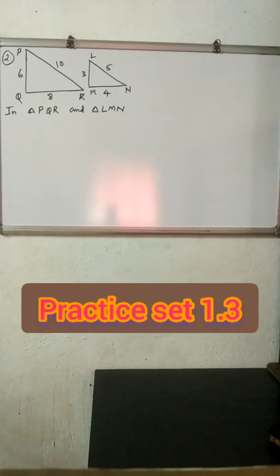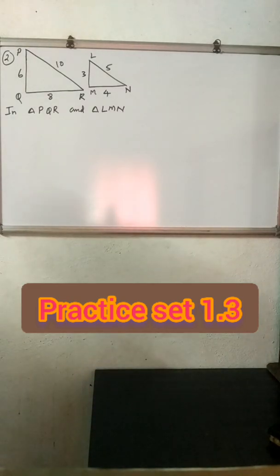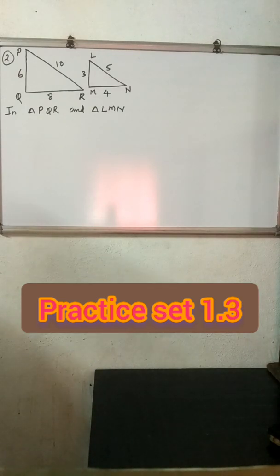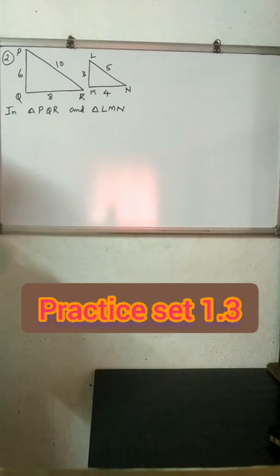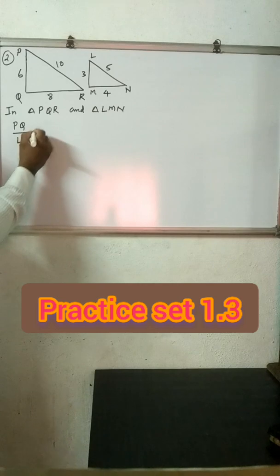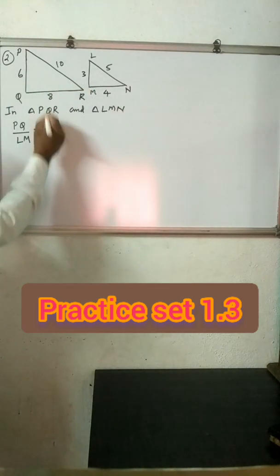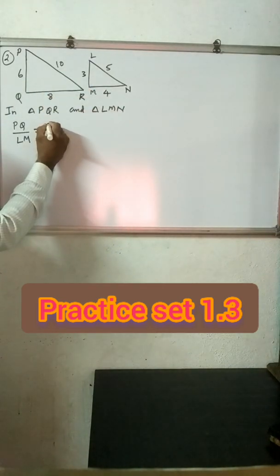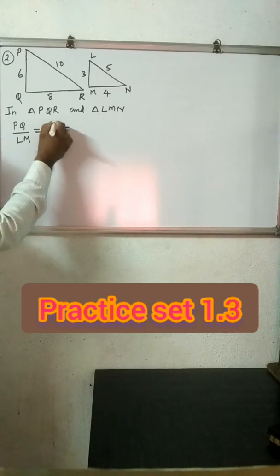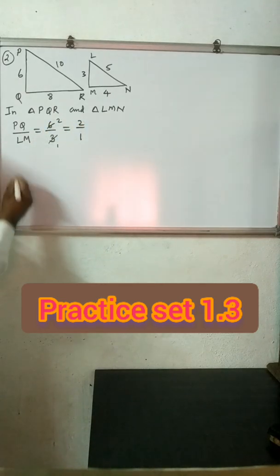Second example: in triangle PQR and triangle LMN, the lengths of the sides are given. We have to check if the triangles are similar and, if so, by which test. Since the sides are given, we check the ratios. PQ upon LM equals 6 upon 3, which reduces to 2 upon 1.